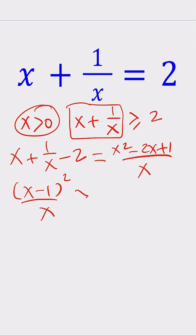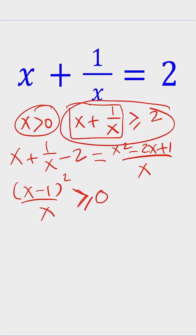So this expression is actually going to be greater than 0. But if x is equal to 1, it can be 0, so we call that greater than or equal to 0. And since this is true, this means x plus 1 over x must be greater than or equal to 2 if x is positive. But it's equal to 2 — how is that possible? That can only happen at x equals 1, which means that's the only solution.